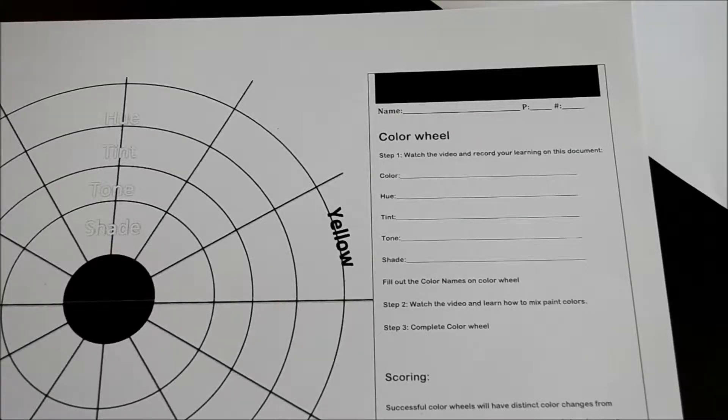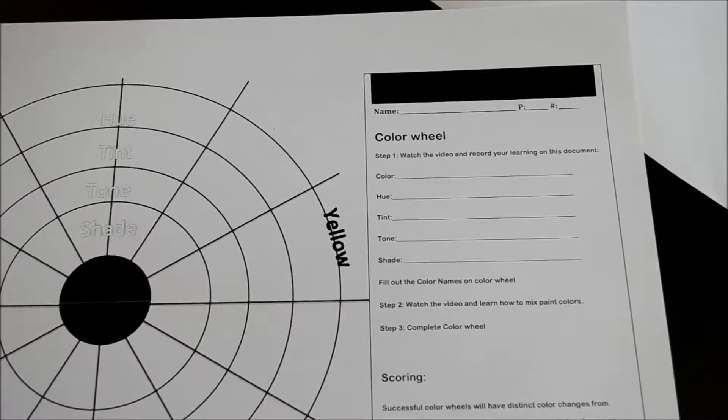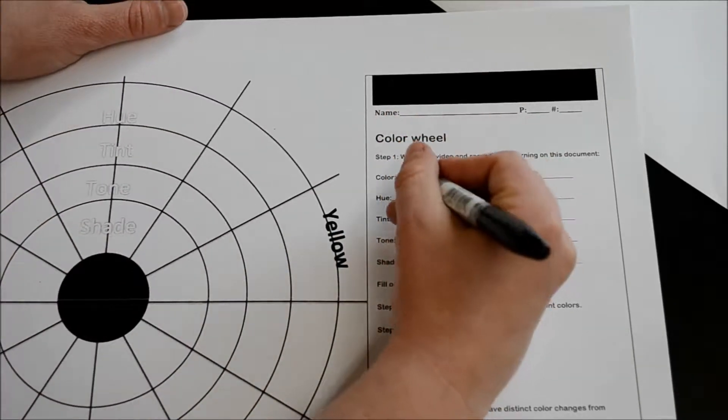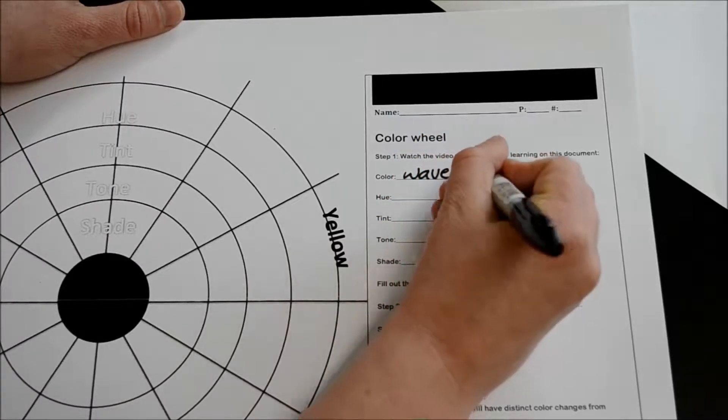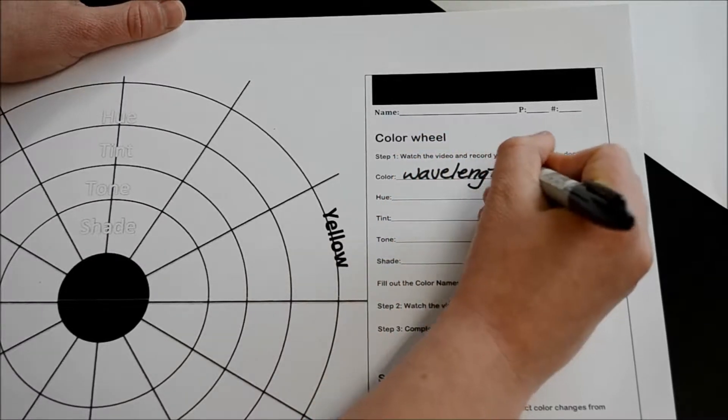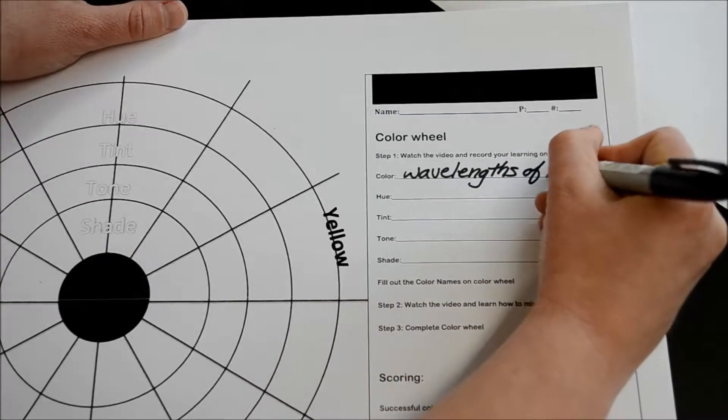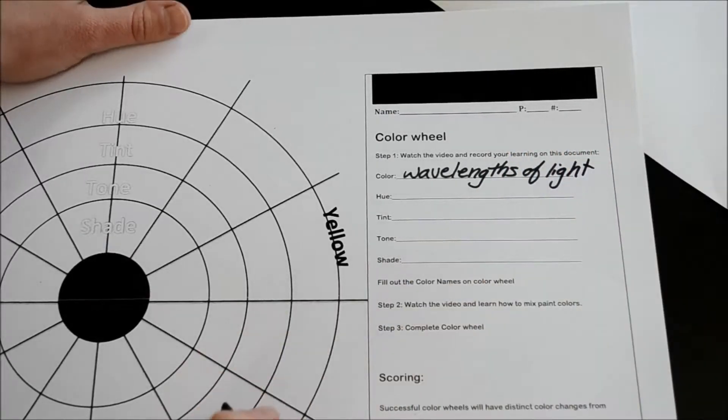First off, what is a color? Well, it can be hard for people to define color. We're going to define it as wavelengths of light, and we'll get into that more.